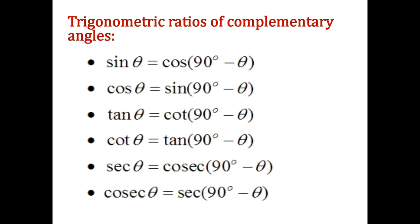In trigonometry, complementary ratios convert as follows: sin converts to cos and cos converts to sin, tan converts to cot and cot converts to tan, secant converts to cosecant and cosecant converts to secant. Generally: sin theta = cos(90° − theta), cos theta = sin(90° − theta), tan theta = cot(90° − theta), cot theta = tan(90° − theta), secant theta = cosecant(90° − theta), and cosecant theta = secant(90° − theta).